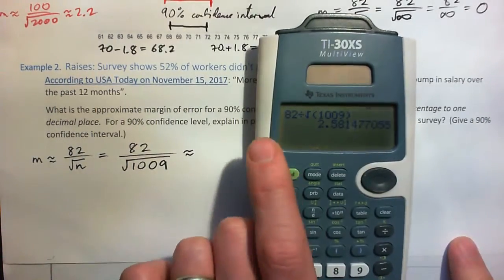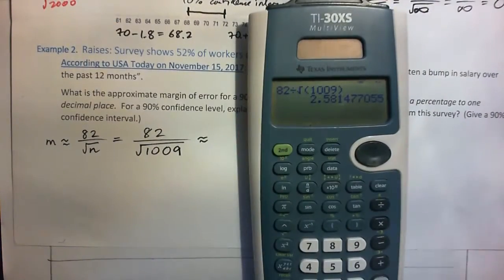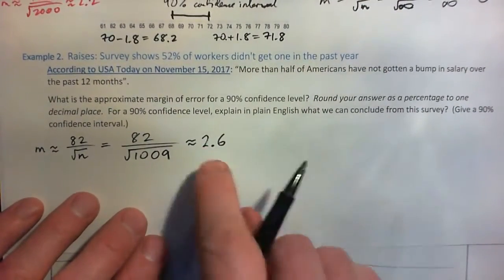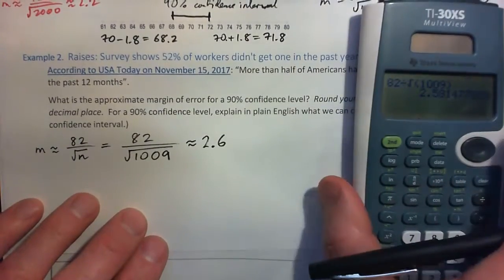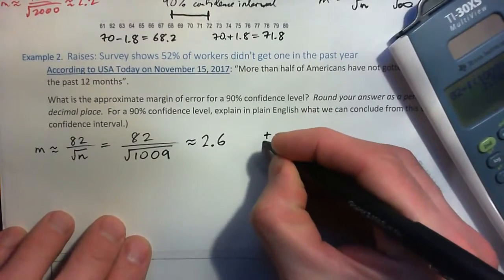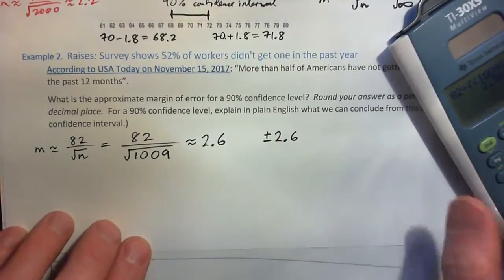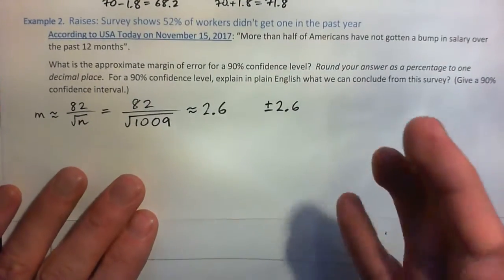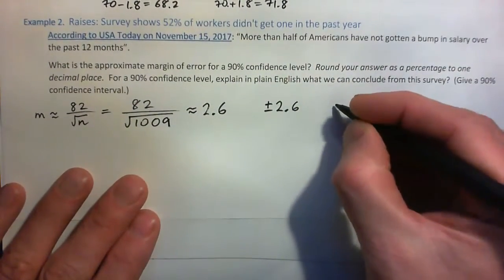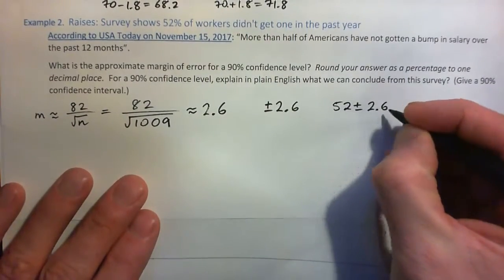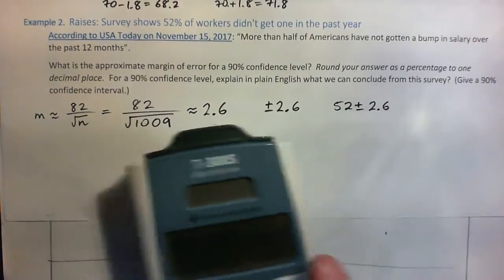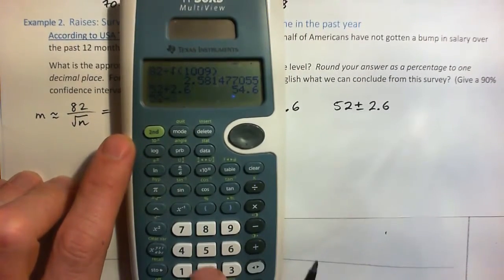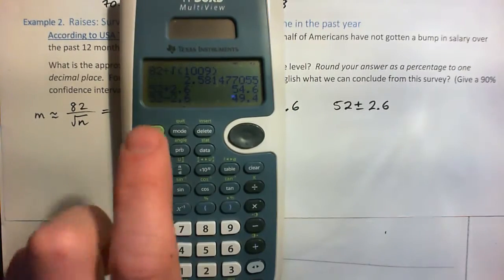The margin of error for 90% confidence is 82 over root n. With 1009 respondents, that gives about 2.58 — approximately 2.6. In surveys, margin of error is written as plus or minus, so we have plus or minus 2.6. Applying that to the survey result: 52 plus or minus 2.6, giving 54.6 and 49.4.